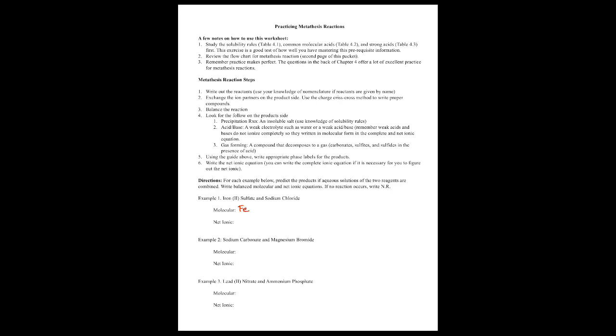Most directions will ask you: if two aqueous solutions are combined, predict the products and write a balanced molecular and net ionic equation, and if no reaction occurs, write 'no reaction.' For the first example, we have iron(II) sulfate. Iron is Fe and sulfate is SO4 2-minus, so we write FeSO4 — Fe is 2+ and SO4 is 2-minus. This is aqueous. And then we have sodium chloride, NaCl aqueous.